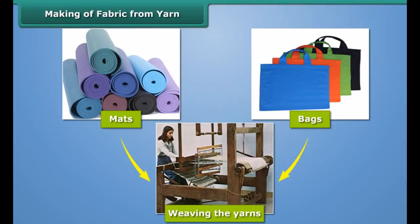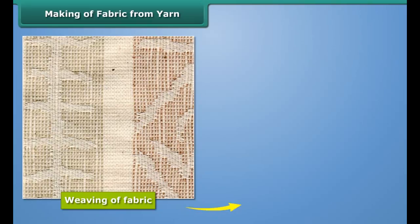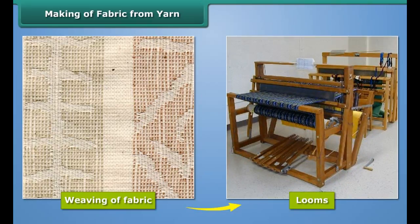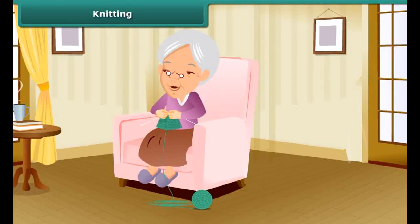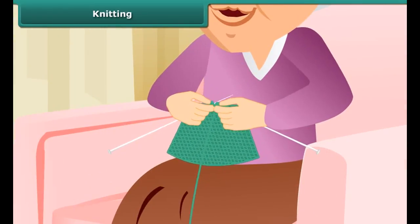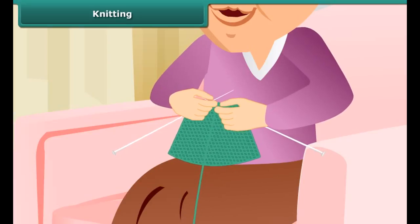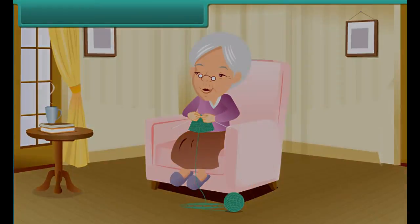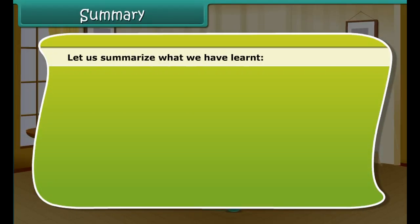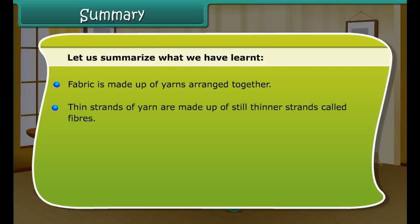Now let us know how fabric is made from yarn. Fabric is made by weaving and knitting the yarns. See these mats or these bags — these are made by weaving the yarns. Weaving of fabric is done on looms. Looms are of two types: hand-operated looms and power-operated looms. You can also make a mat with a few thin ropes. Take a few ropes of yellow and blue color and weave the yellow and blue strips one by one as shown. Similarly, two sets of yarns are woven to make a fabric.